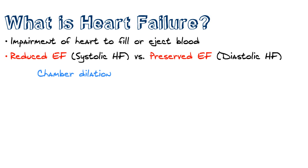Reduced ejection fraction heart failure, or systolic heart failure, is a result of the heart being unable to eject the adequate amount of blood needed. The reason this develops is that the left ventricle of the heart dilates. The dilation is due to what's called eccentric remodeling, which means that instead of cells being laid side by side to increase the wall of the heart, they're laid from end to end, causing lengthening of the wall of the heart.